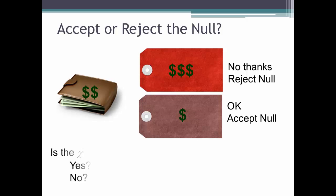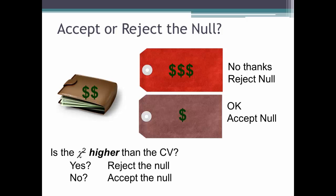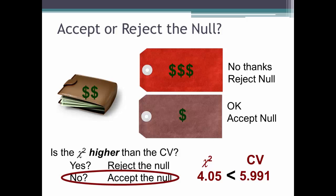So if the calculated chi-square is higher than the critical chi-square value, you reject the null in favor of the alternative hypothesis. In our example, the calculated chi-square of 4.05 is lower than the critical value of 5.991, so your decision would be to accept the null. In other words, you cannot conclude that what you observed supports your hypothesis that there is a dominant learning style.